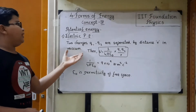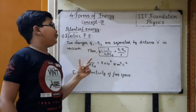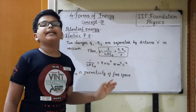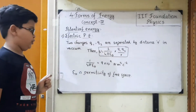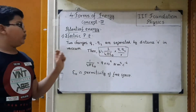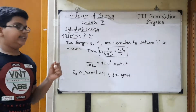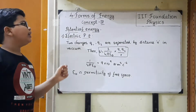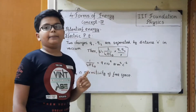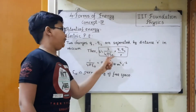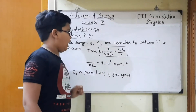Let's take two charges. Q1 and Q2 are separated by a distance R in vacuum. Then the electric potential energy is U equals 1 by 4 pi epsilon 0 into Q1 Q2 by R.